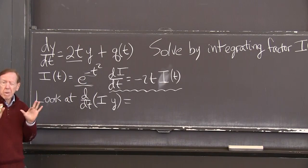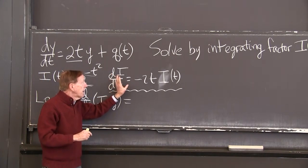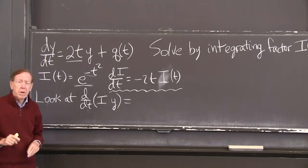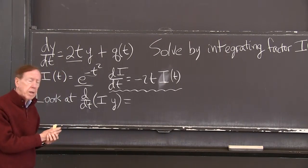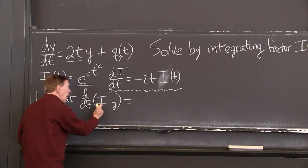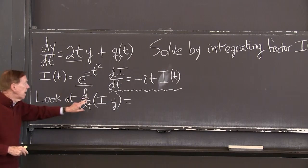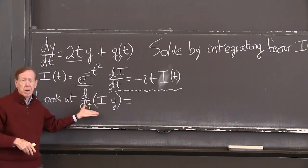So it's that little device that gives us an integrating factor that makes the equation simple. And now I want to look at the equation. What I want to look at is the derivative of i times y. Instead of just dy dt, let me look at the derivative of i times y. So I have a product here.